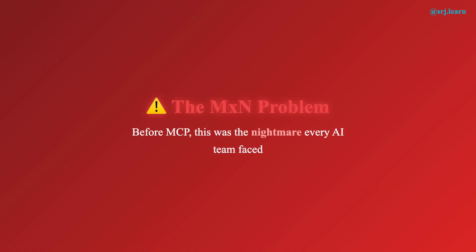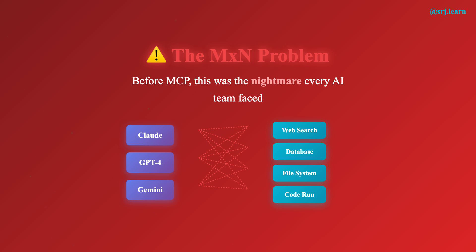Before MCP, building agents was challenging. Every LLM has its own way of handling tools — OpenAI expects tools in one format, Anthropic expects a different format, Google has its own format, and so on. Imagine you have four different tools: a calculator, a web search, a database query, and a file reader. Without a standard protocol, you need to write a connector for each combination — 4 tools times 3 models equals 12 connectors to write and maintain. This is the M times N problem: M models times N tools equals M times N connectors. As you add more models or tools, the number of connectors explodes.